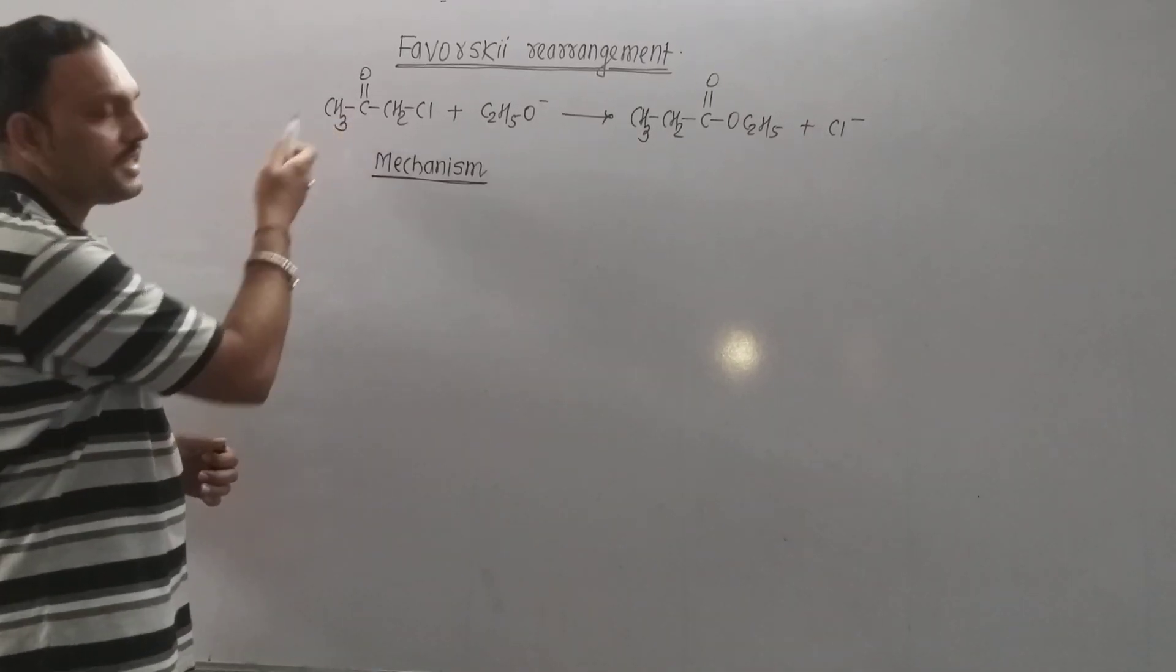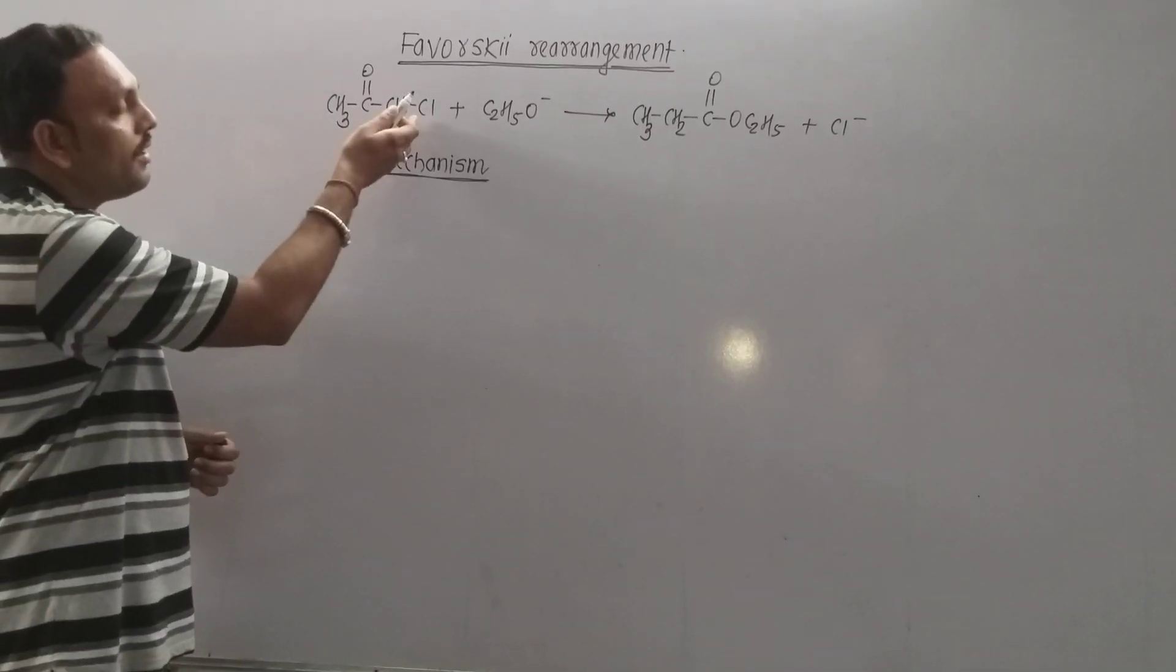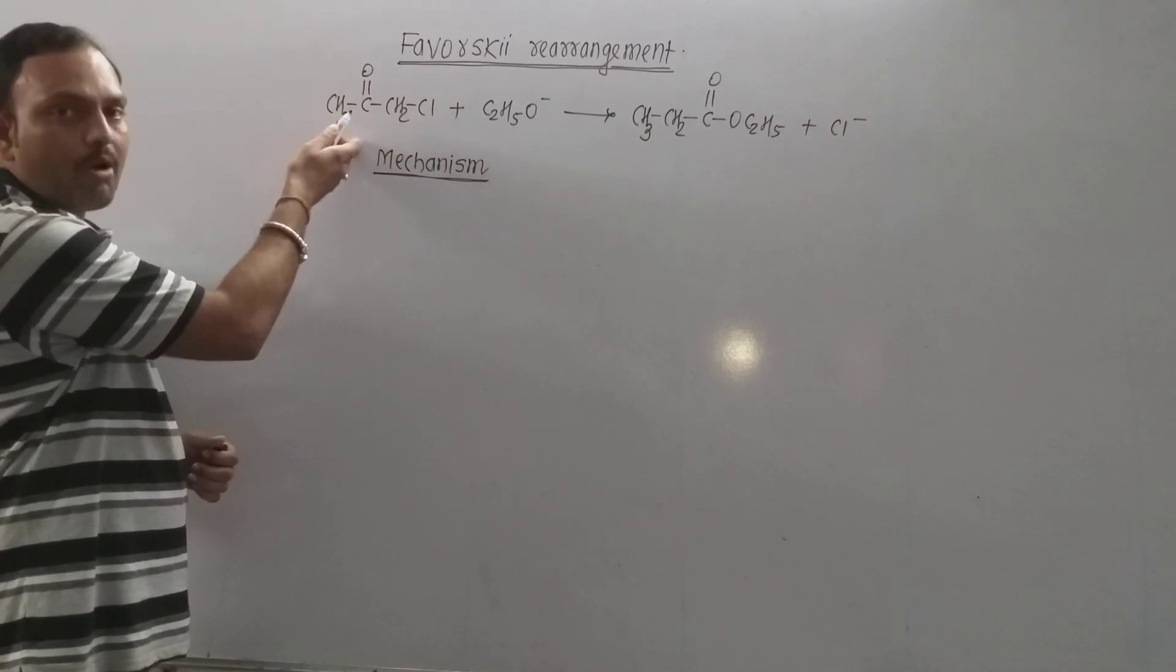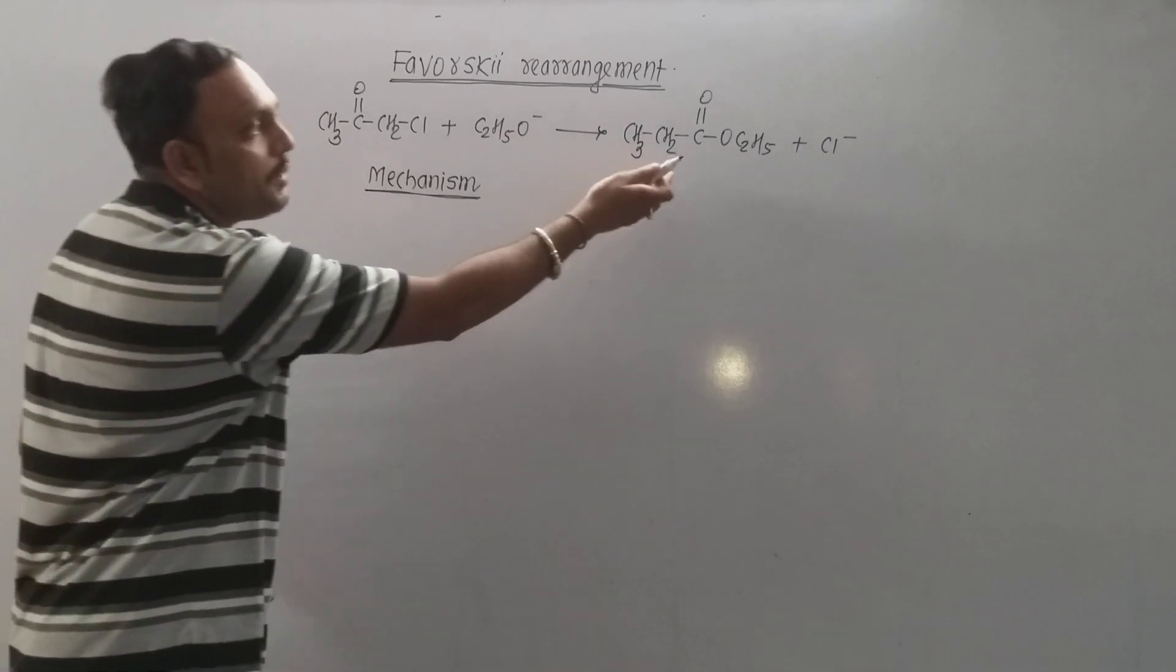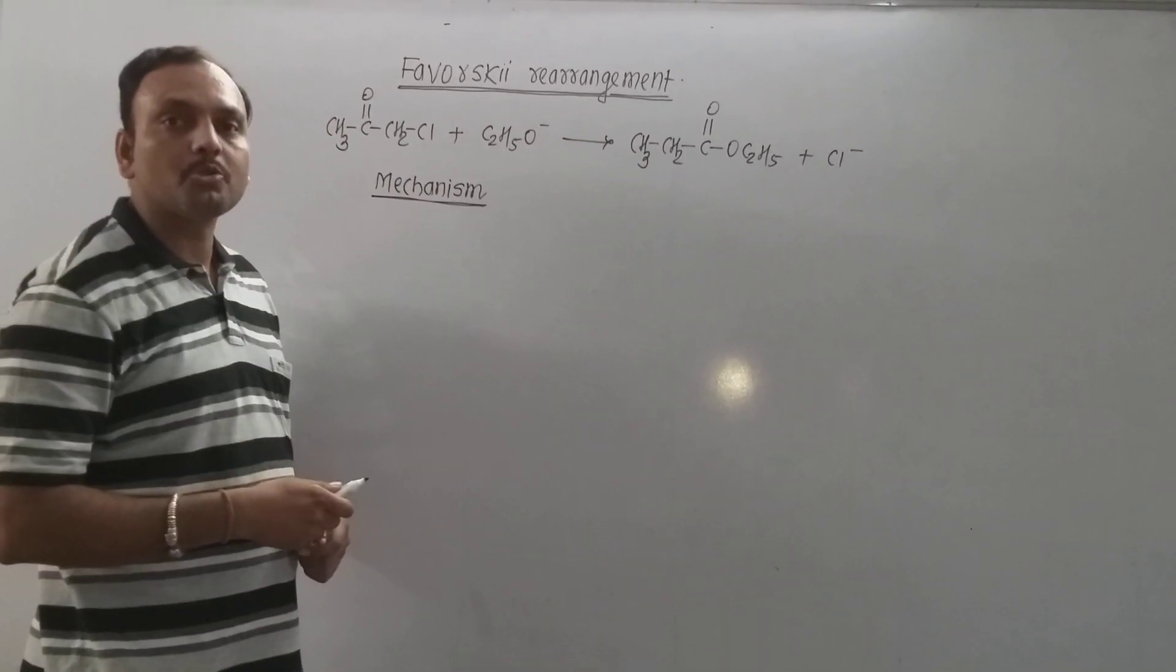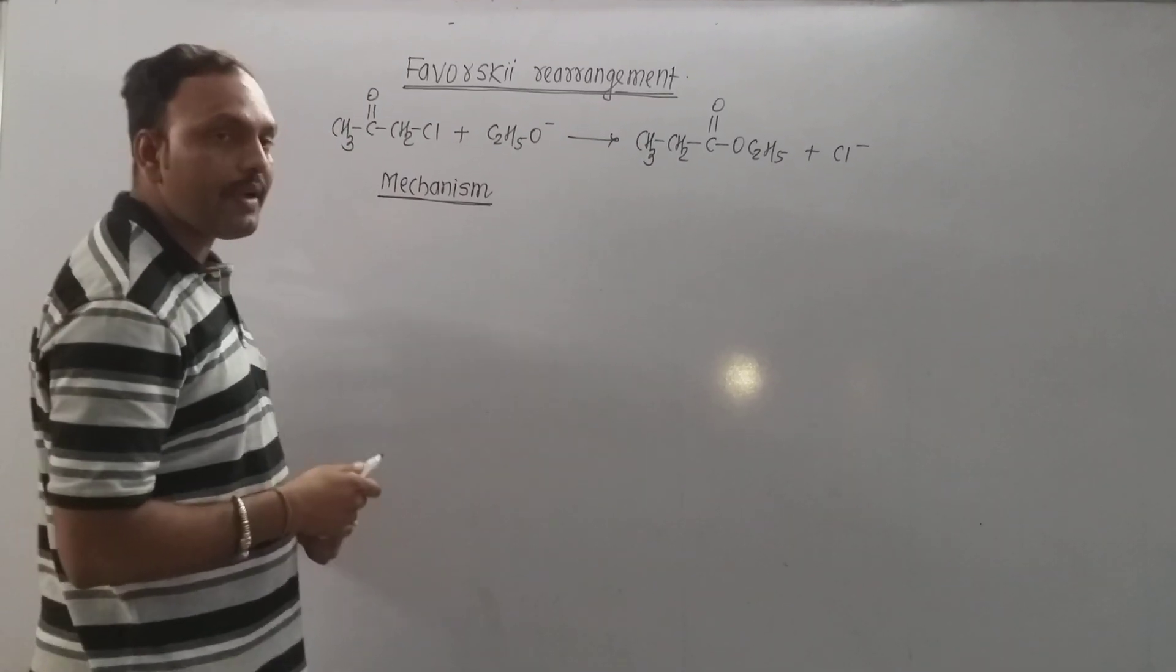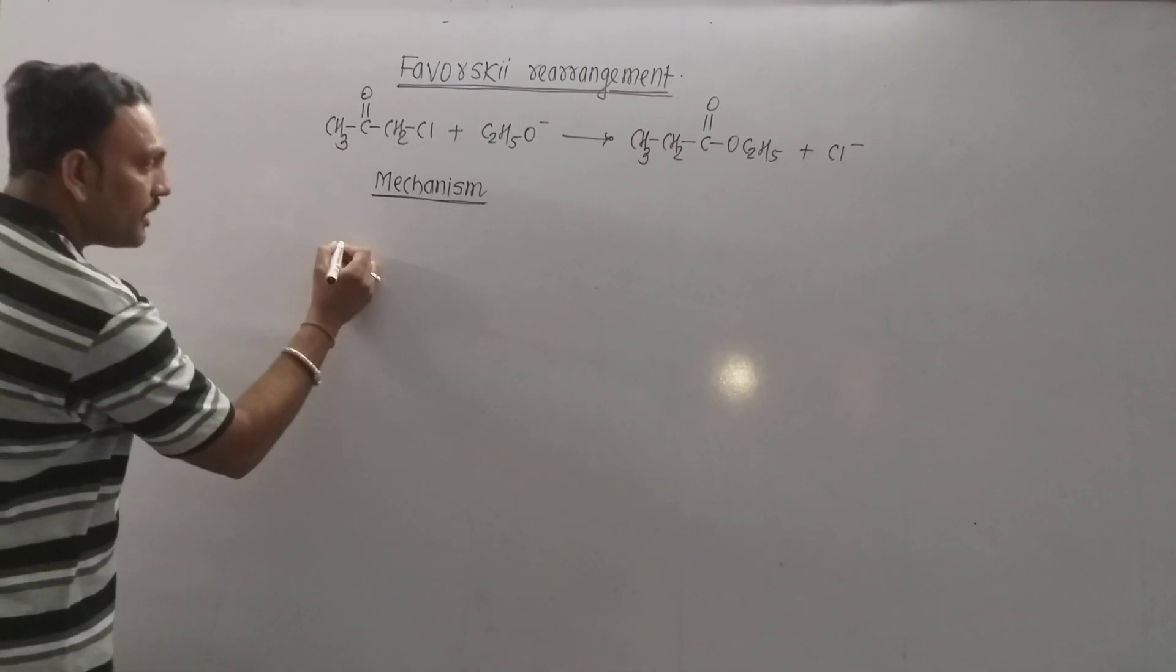For example, consider this reaction. When 1-chloropropanone is allowed to react with ethoxide ion, then ethyl propionate ion chain which happens to be rearranged ester. Now as far as mechanism of this reaction is concerned,